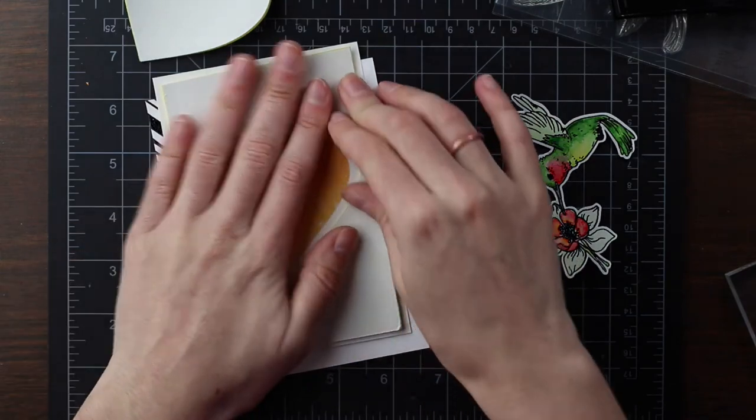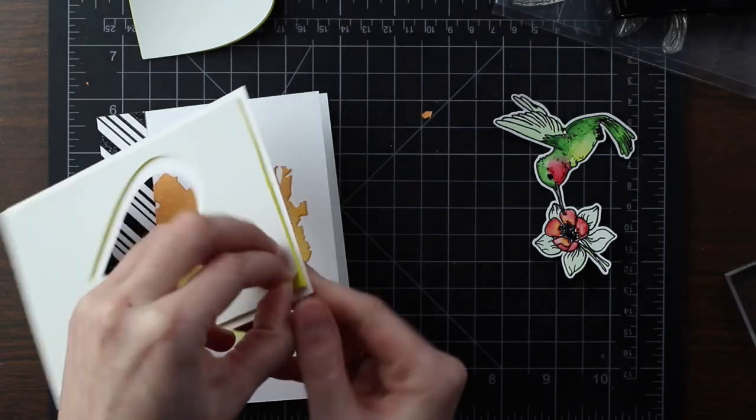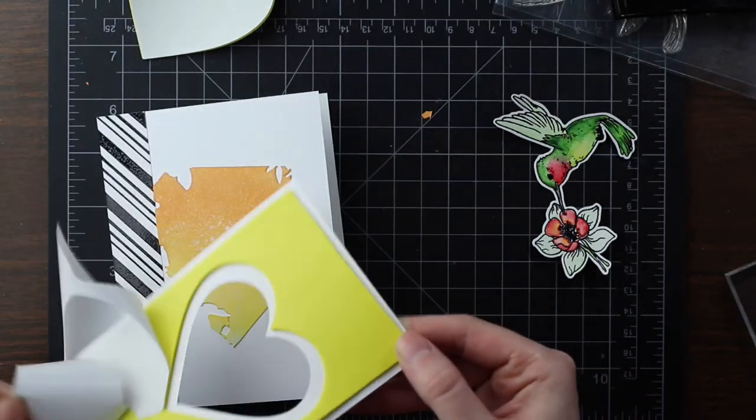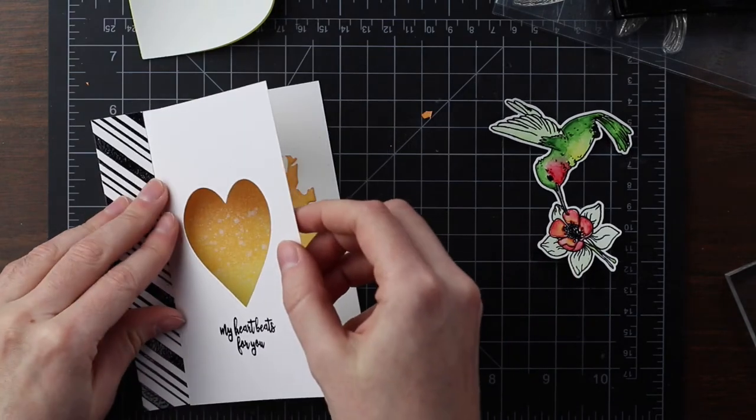And then I just removed the backing from the one side. I really love this foam adhesive. You can find it at Walmart, at Joann Fabrics, Amazon, you can find it anywhere. Well, maybe not anywhere, but you can find it at Walmart, so you can pretty much find it anywhere. And then I just adhered that down.